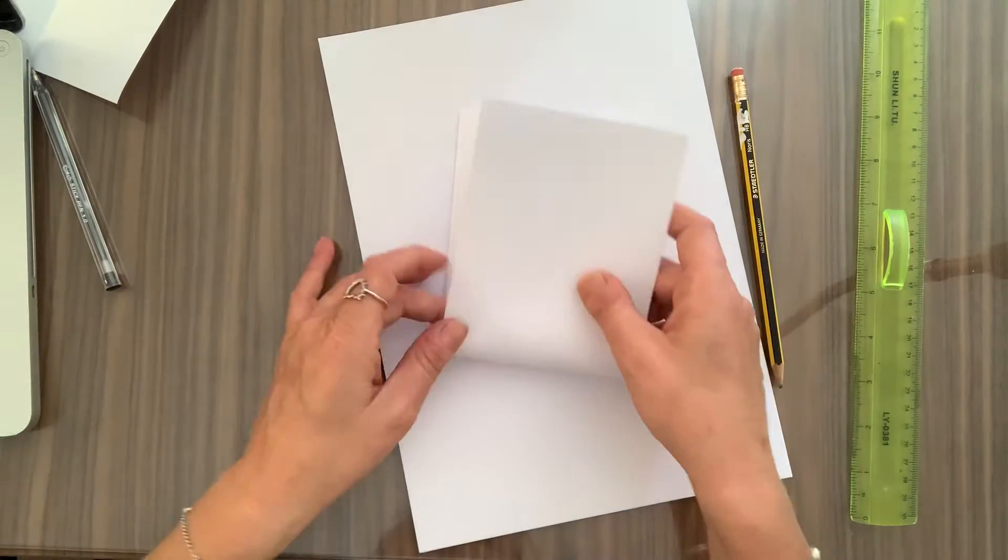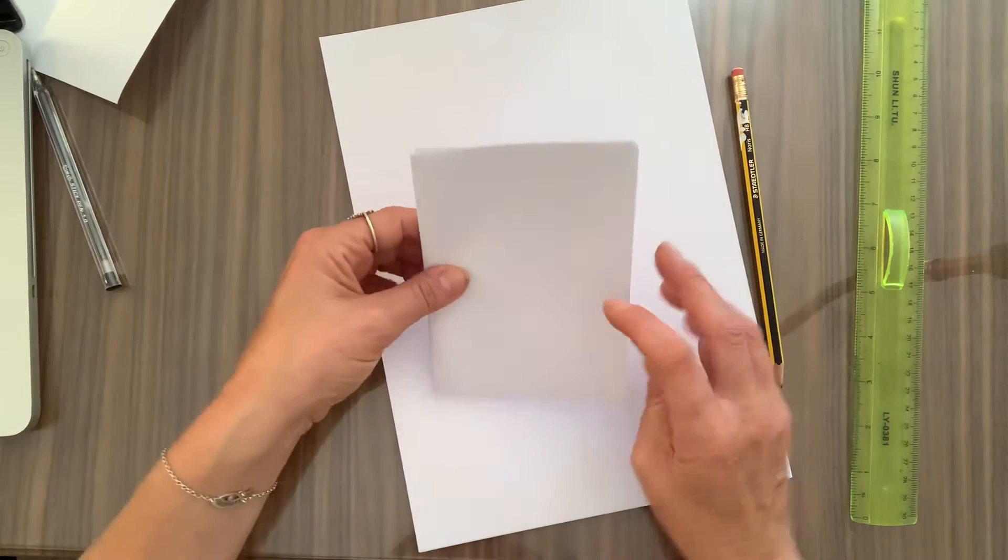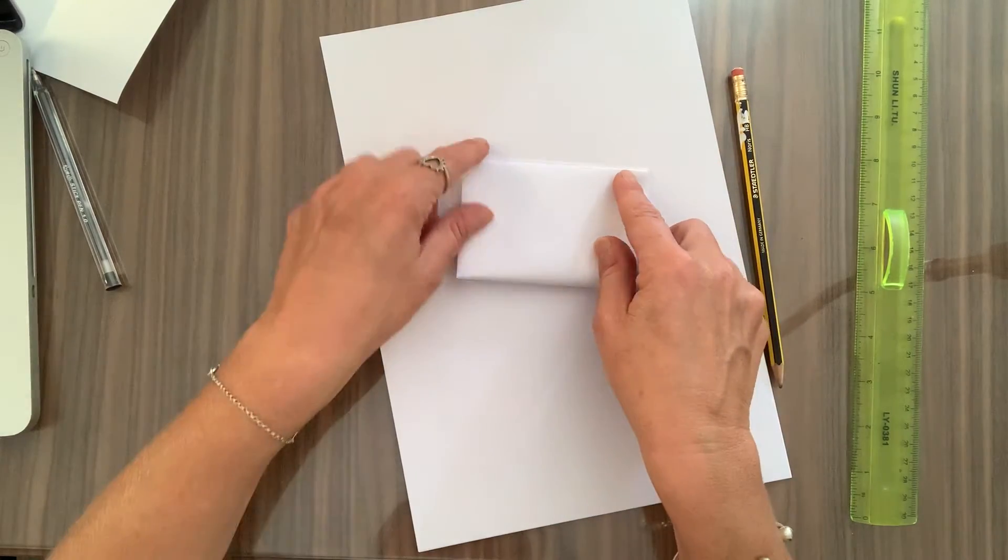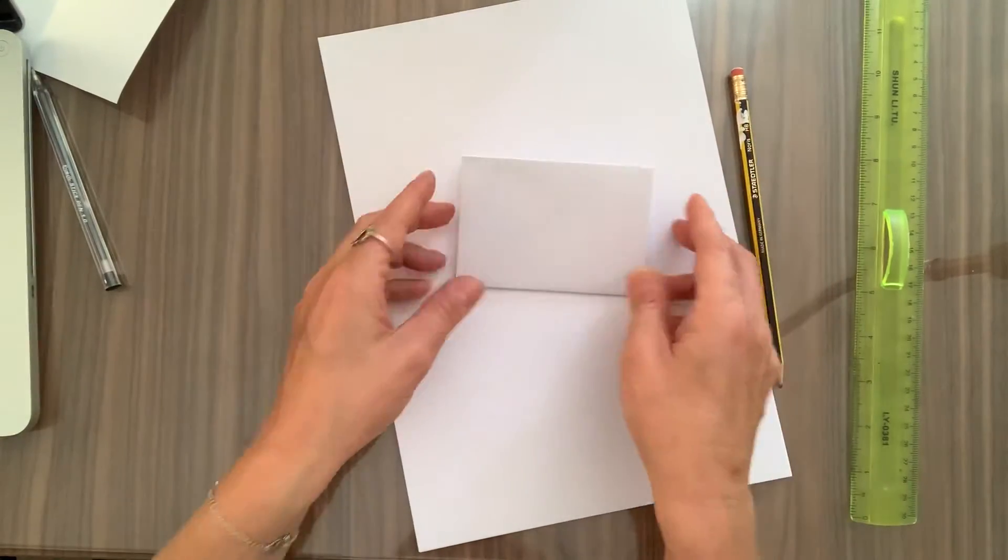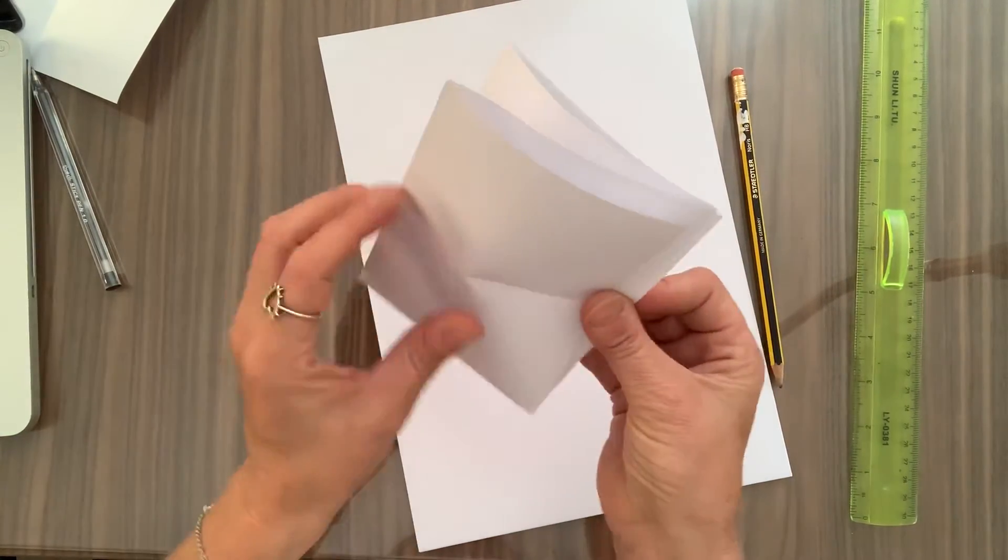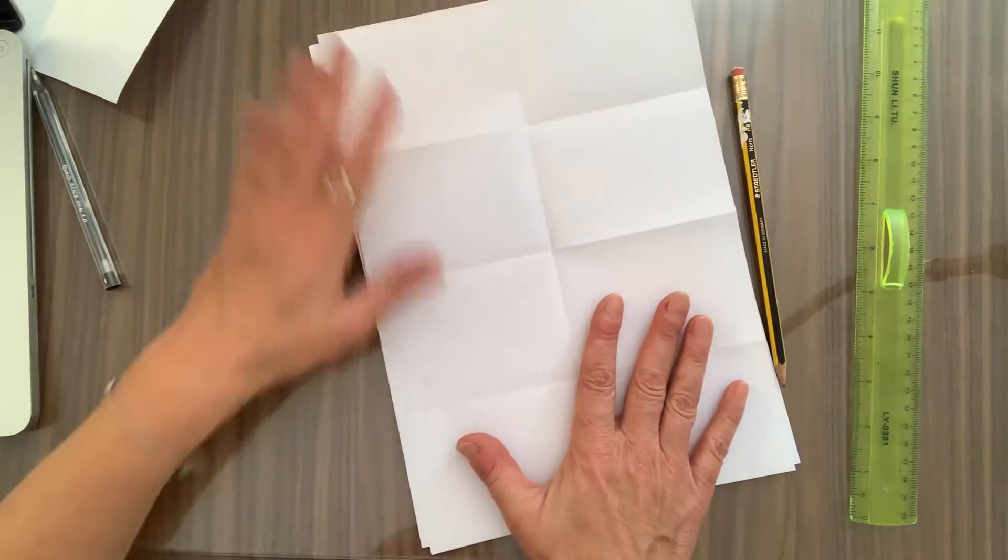We're going to then fold it this way into quarters, and then we're going to fold it again this way. And that means we'll have eight shapes. They are rectangles, but that's okay. It gives you a little bit of a template to work to for the size of your work.